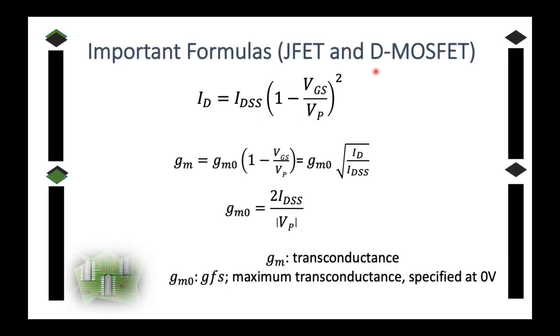So these are the important formulas when you are dealing with J-FET and D-MOSFET. The way you solve D-MOSFET is just the same as how you're going to solve J-FET. You have ID that is equal to IDSS times quantity 1 minus VGS over VP squared.